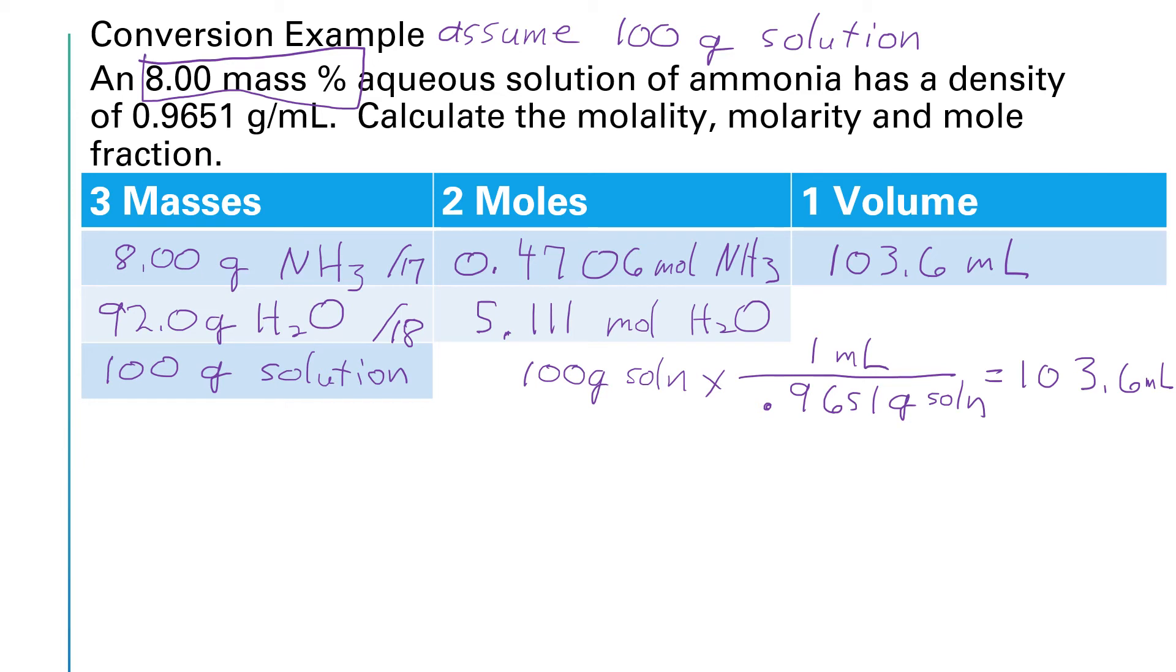Now that I have all these numbers, I can go to town with these calculations. The molality is defined as the moles of solute over kilograms of solvent. So looking up here into my table, for moles of solute, that would be moles of ammonia. So that's 0.4706 moles. And for the kilograms of solvent, that would be, well, let's see, I've got 92 grams of water. If I move the decimal three times to get kilograms, I'll have 0.092 kilograms of water. And if I run that through my calculator, 0.4706 divided by 0.092, that's going to give me 5.12 molal for the molality of the solution.